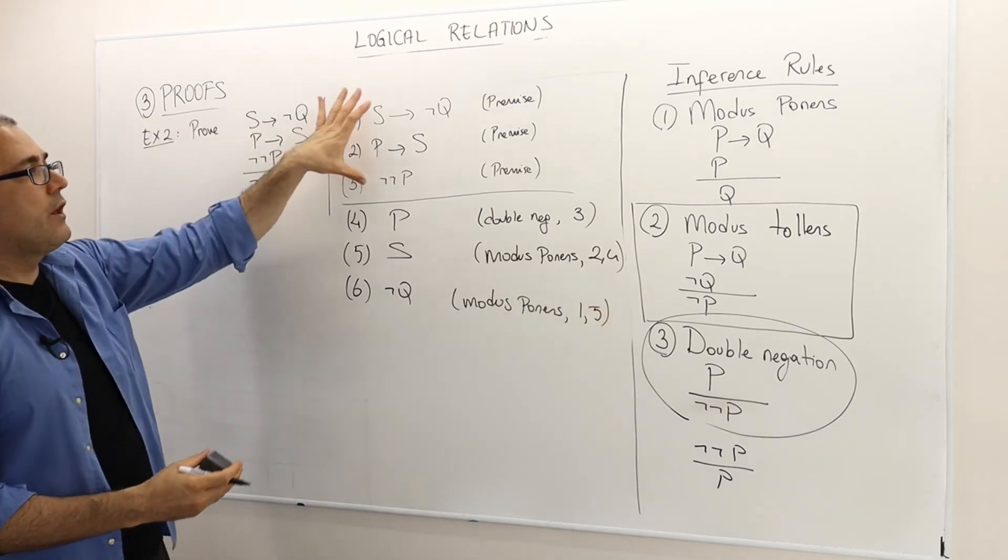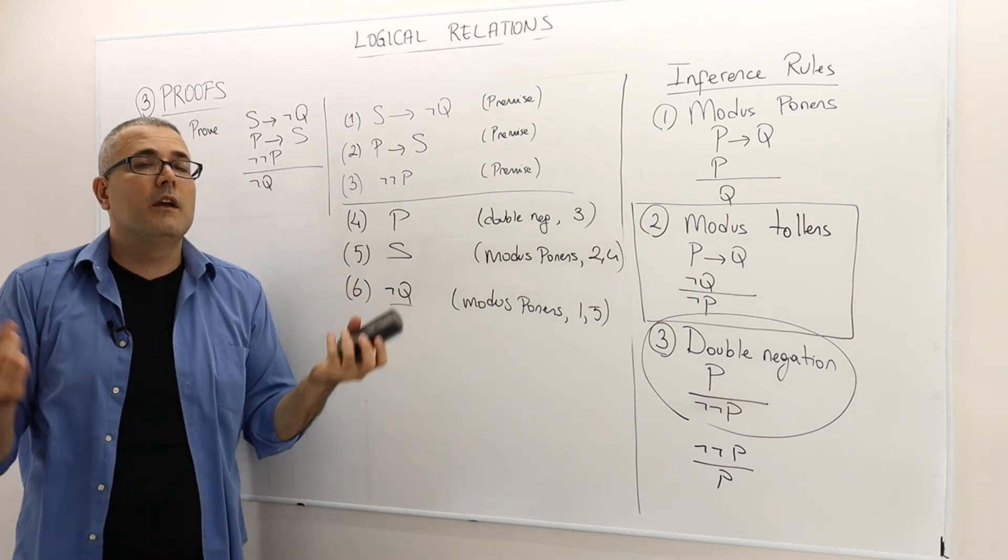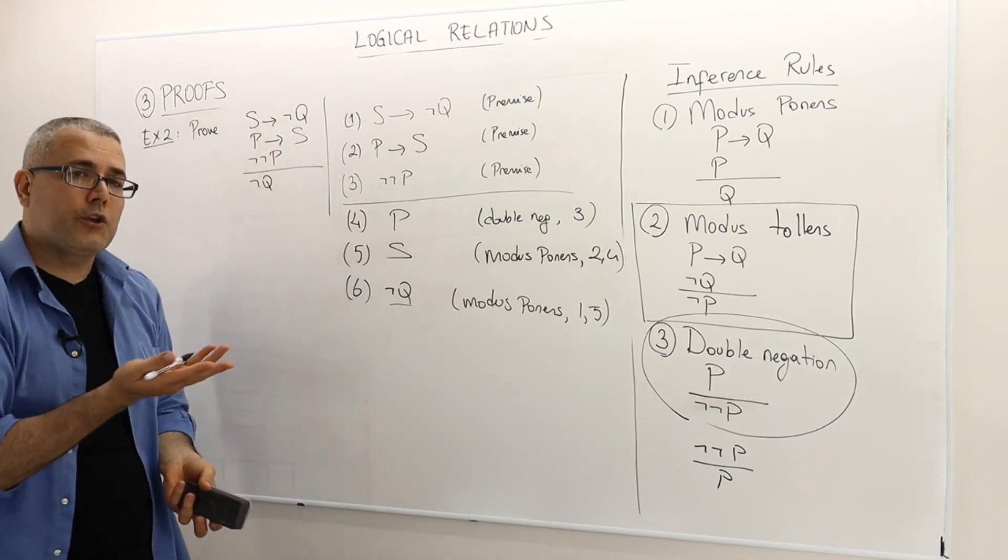Alright, so given those premises are true, well, then this conclusion not Q must be true as well, and hence this is the direct proof of this argument.